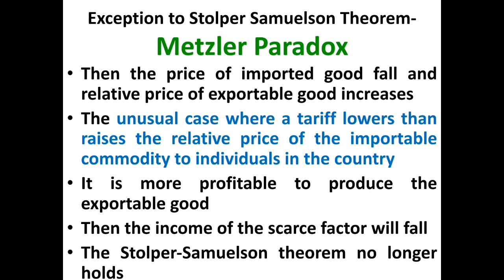This is an unusual case when tariff lowers rather than raises the relative price of the importable commodity. It will be more profitable to produce the exportable commodity, and the income of the scarce factor of production will fall — the exact opposite of the Stolper-Samuelson theorem. Stolper-Samuelson says tariff benefits the country's scarce factor of production, but Metzler pointed out that when there is an improvement in terms of trade, tariff benefits the country's abundant factor of production. That's why we call it a paradox.